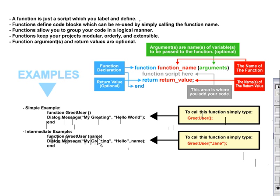So we're going to pass a person's name to our function. That means when we call our function we'll be passing that name. Inside here we've got our same dialog message box, but this time we've concatenated the variable name onto our word 'hello.' So when you run this function, you're going to get a dialog message box that says 'my greeting, hello,' and then whatever name you pass to it.